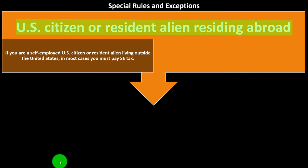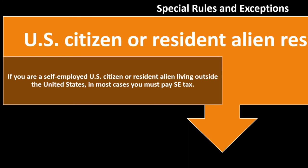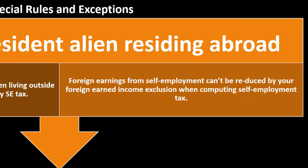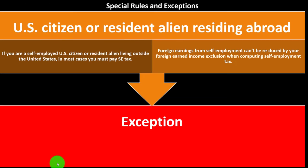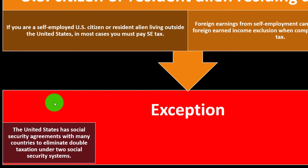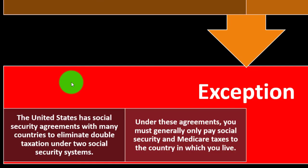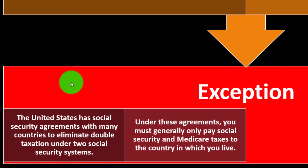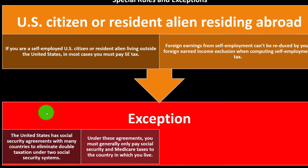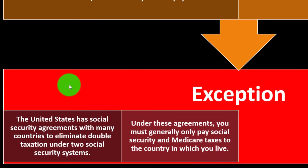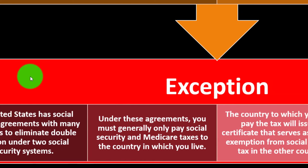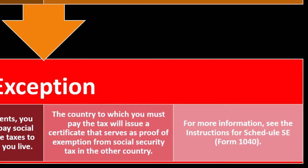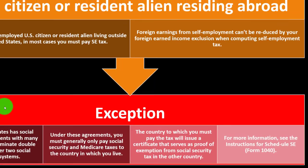U.S. citizen or resident alien residing abroad: if you are a self-employed U.S. citizen or resident alien living outside the United States, in most cases you must pay self-employment tax. Foreign earnings from self-employment cannot be reduced by your foreign earned income exclusion when computing self-employment tax. The United States has Social Security agreements with many countries to eliminate double taxation under two Social Security systems. Under these agreements, you must generally only pay Social Security and Medicare taxes to the country in which you live, and that country issues a certificate serving as proof of exemption from Social Security tax in the other country.